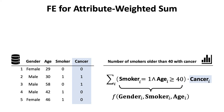This can be presented as a weighted sum of values in the sensitive field cancer. The weight for each summand is computed by evaluating the function f on the corresponding three public attributes: gender, smoker, and age. So we call this attribute weighted sum.